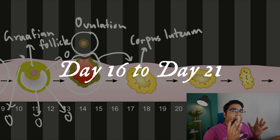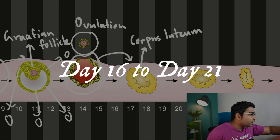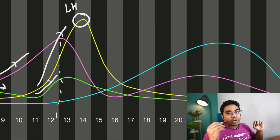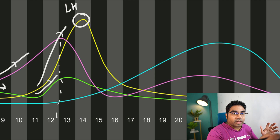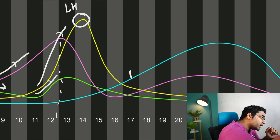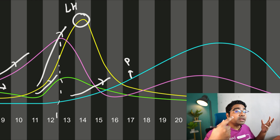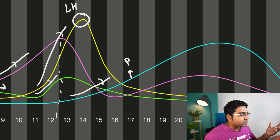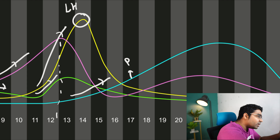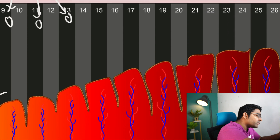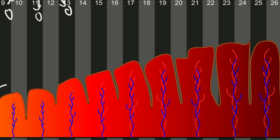After day 14, from day 14 to day 21, now that the corpus luteum has formed, it is the corpus luteum that secretes progesterone. We can see that progesterone — the blue line — starts to rise after day 14. When progesterone levels rise, this has an effect on the endometrium, and we can see the endometrium really starts to thicken during this phase.